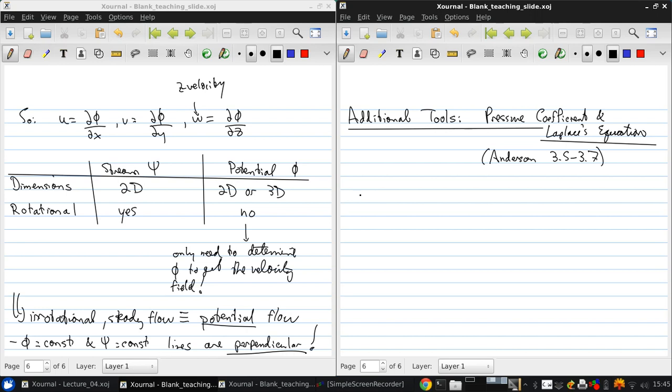The pressure coefficient, C sub P, is defined as the pressure minus the free stream pressure divided by the free stream dynamic pressure. Q infinity is one-half rho infinity V infinity squared. This is a pressure coefficient.